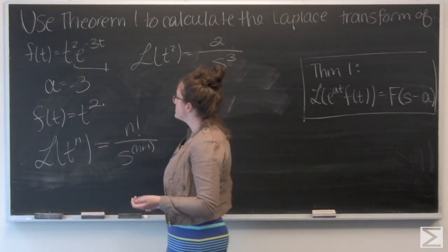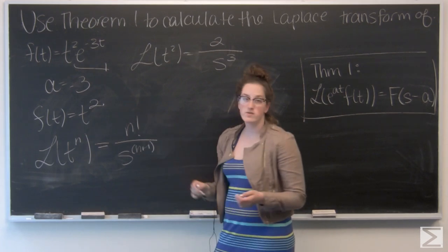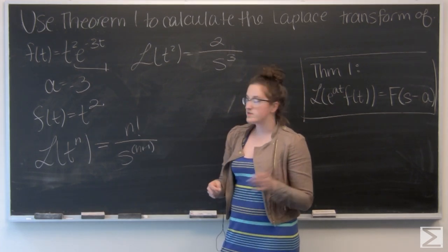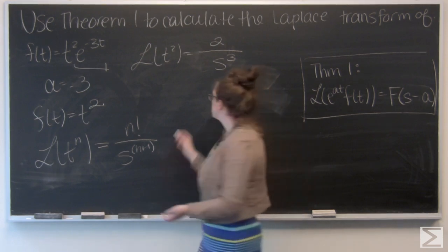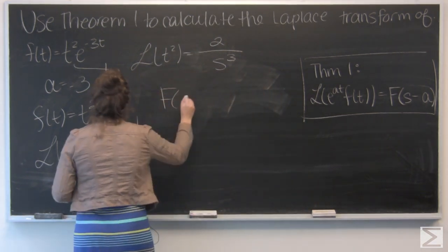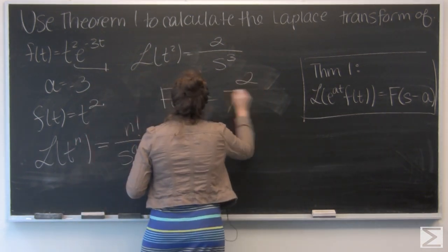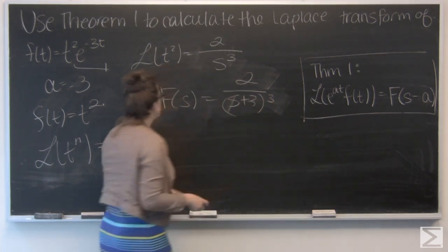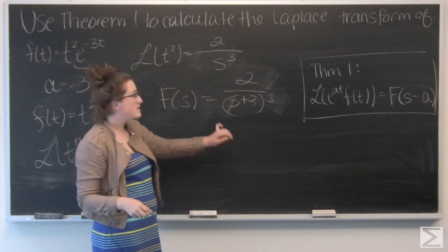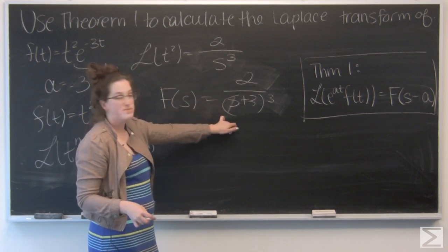And now I want to go ahead and shift that 3 units to the left. So I'm going to swap my s for an s plus 3. So I get the Laplace transform, it's 2 over quantity s plus 3 cubed.